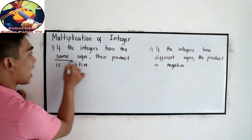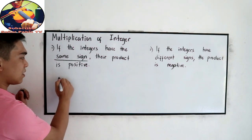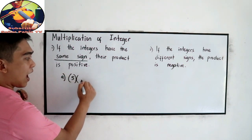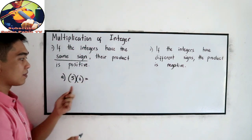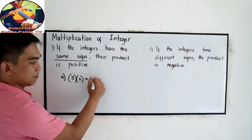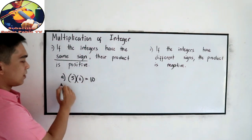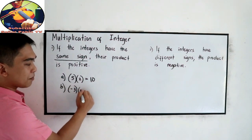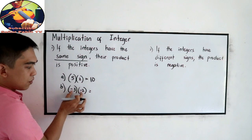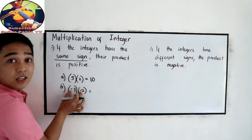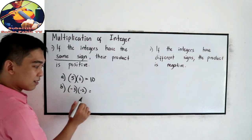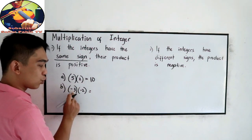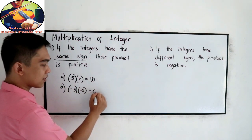Same sign, their product is positive. For example: 5 times 2 is 10. For letter B, negative 3 times negative 2 — both are negative, so the answer is positive: 2 times 3 is 6, positive 6.